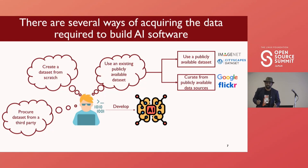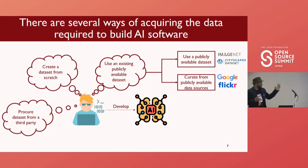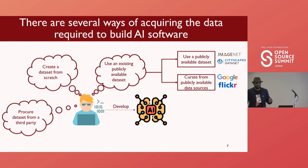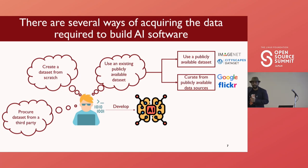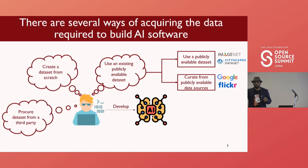How do we get this data? There are only a few finite ways. One is we can go buy the data from somewhere, or we can create our own dataset, or we can use an existing publicly available dataset. When using a publicly available dataset, we can get one that is already pre-curated like ImageNet, or we can hit sources like Google or Flickr images and collect our own dataset.